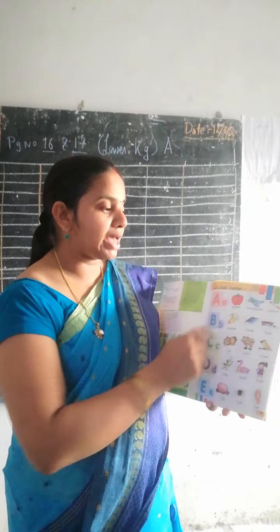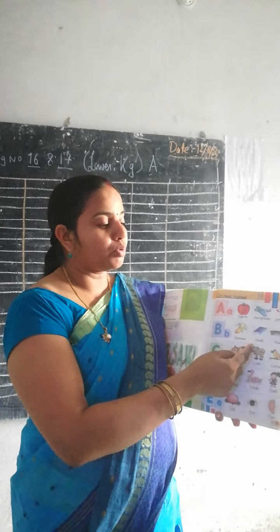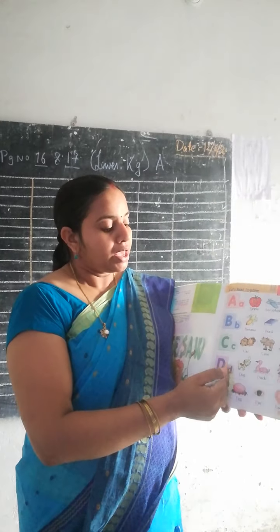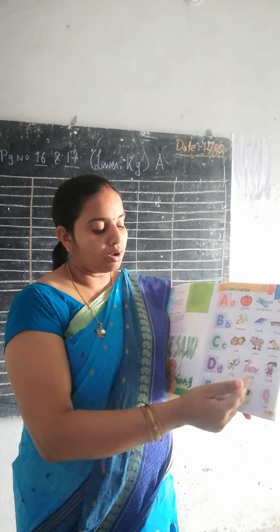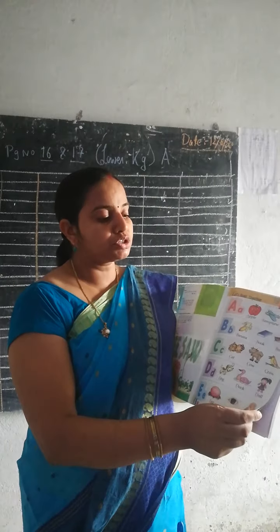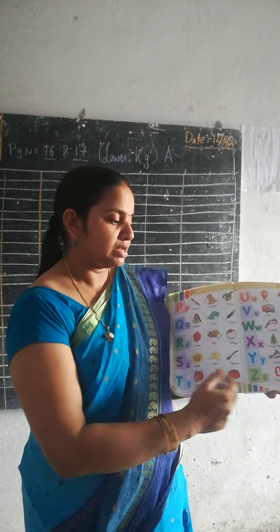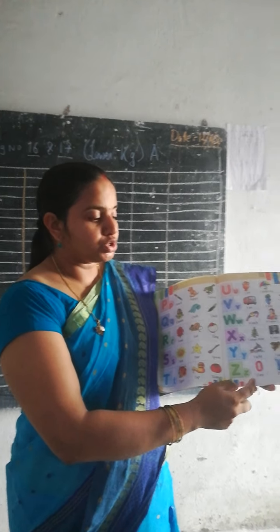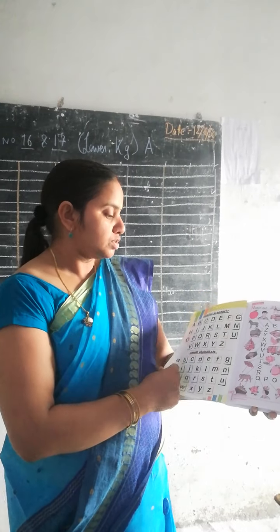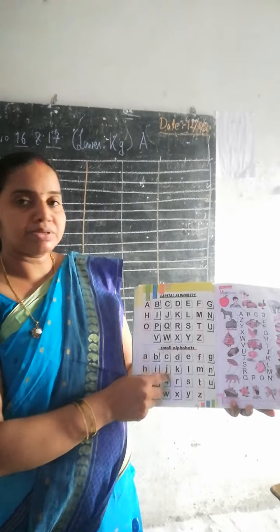For example: apple, airplane, arrow, banana, boat, cat, cow, crow, dog, duck, doll, egg, arm, ear. So these are the different words we have been able to form through to Z — that is zero, zip, and zebra. After that we saw the small letter and the capital letter and how to write them.